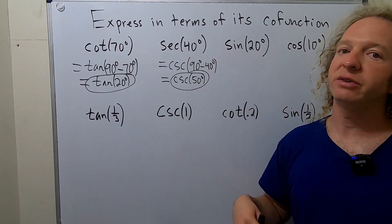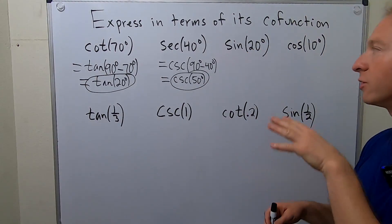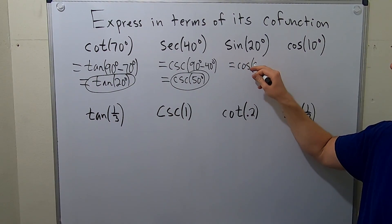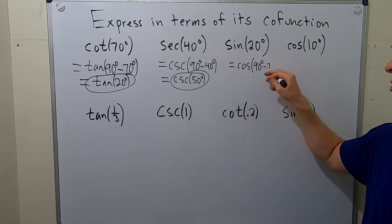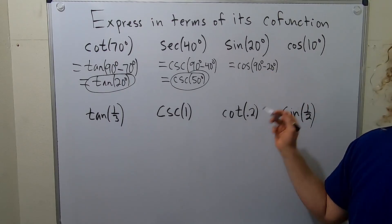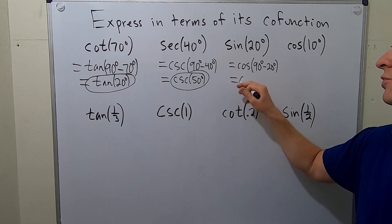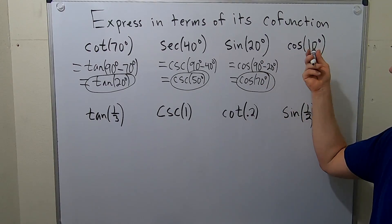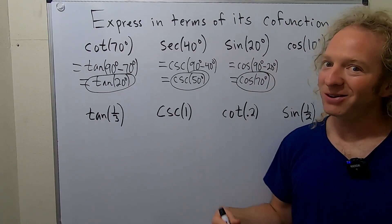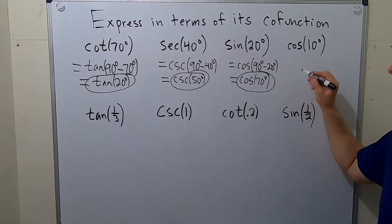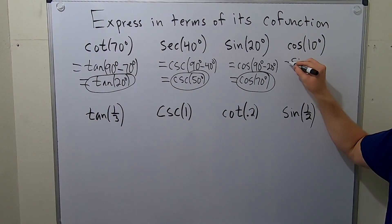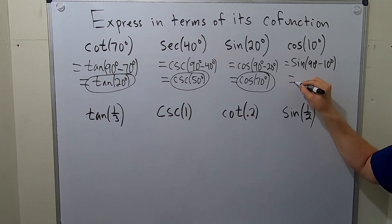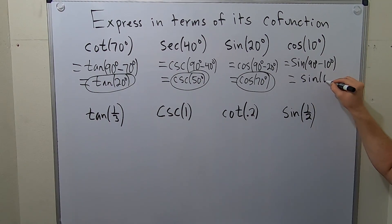Sine — its co-function is cosine. So this is equal to cosine of 90 minus 20, which is 70 degrees. So this is cosine of 70 degrees. Cosine — its co-function is sine, so this is sine of 90 degrees minus 10 degrees, which equals sine of 80 degrees.